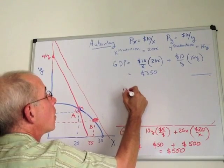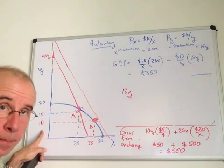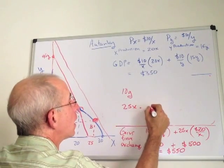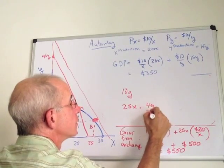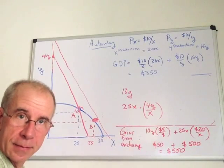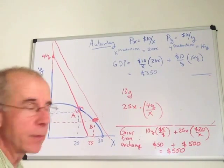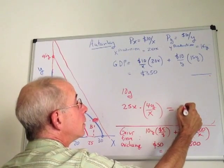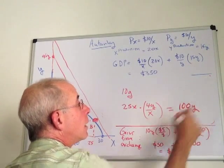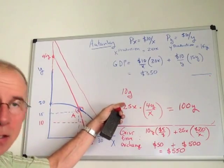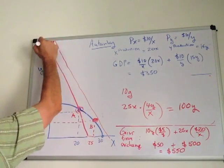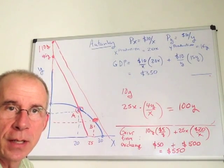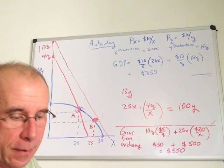You start out with 10 units of Y by assumption. We've got 25 units of X. The international prices are 4Y for every X. X is four times as expensive, more valuable than Y. So we can turn these 25 units of X into 100 units of Y, added to the 10 units of Y that we started with. In other words, that point is 110Y. So there are extra benefits associated with specializing according to comparative advantage.